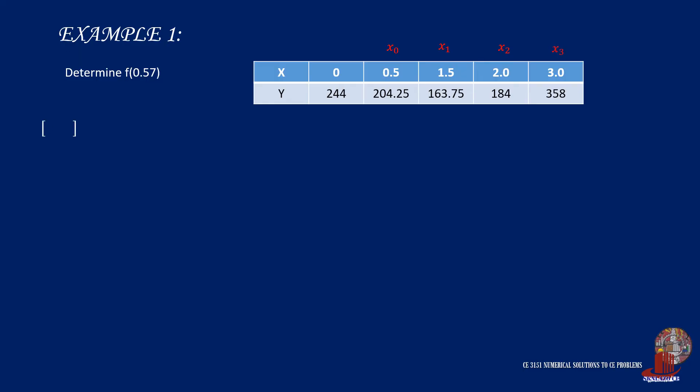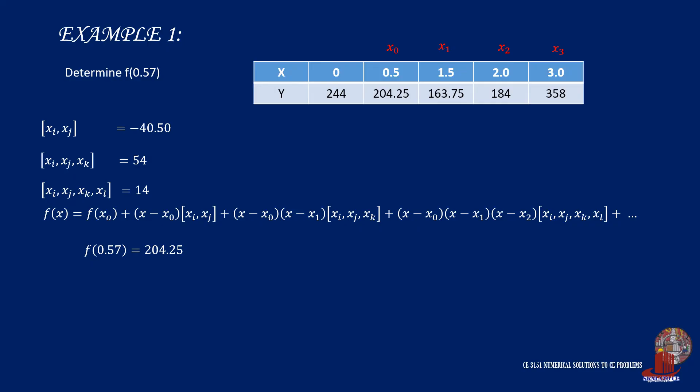Just the same, we plug these new values in the equation and look for f of 0.57. The long formula becomes f of 0.57 is equal to 204.25, plus the next term comprised of 0.57 minus 0.5, multiplied by negative 40.50. Then the third term is 0.57 less 0.5, multiplied by 0.57 minus 1.5, and again multiplied by 54.